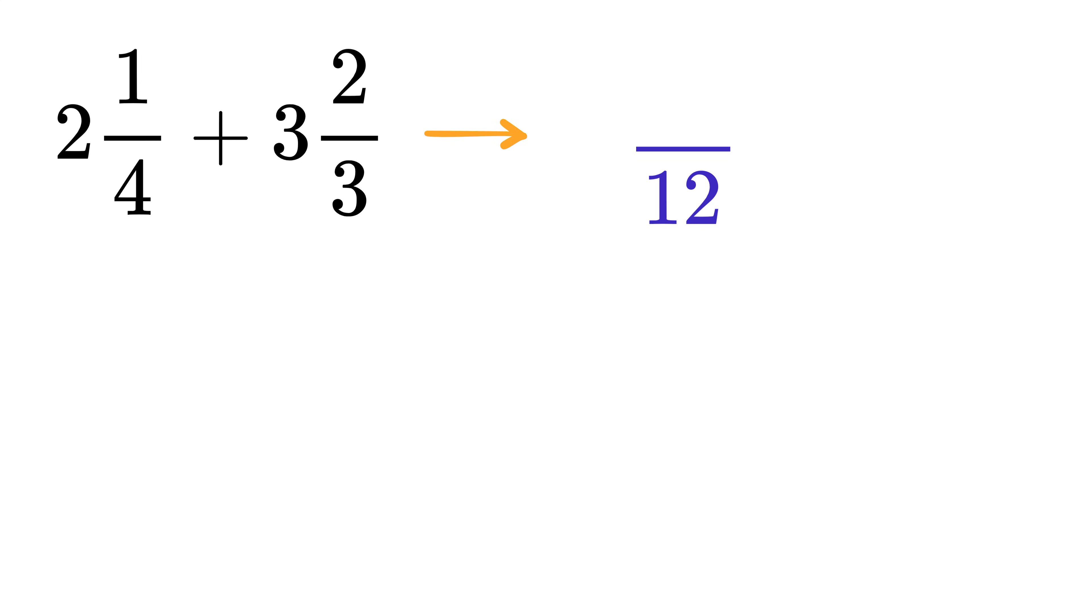Next thing, what we will do is cross multiply each numerator with the other denominator. We have 1 times 3, which equals 3. Then we have 2 times 4, which equals 8.